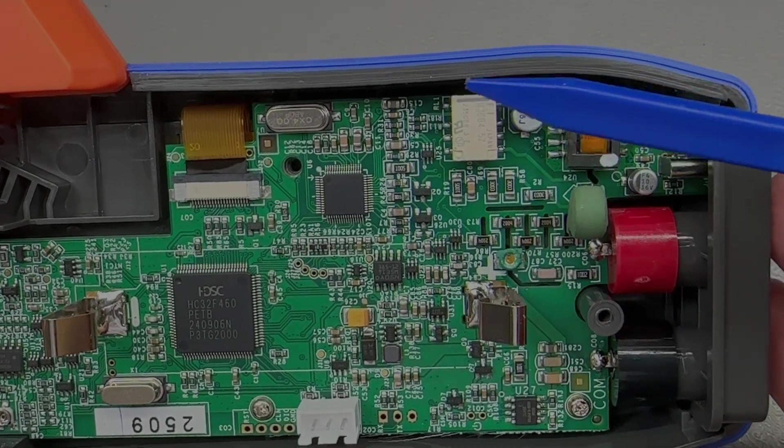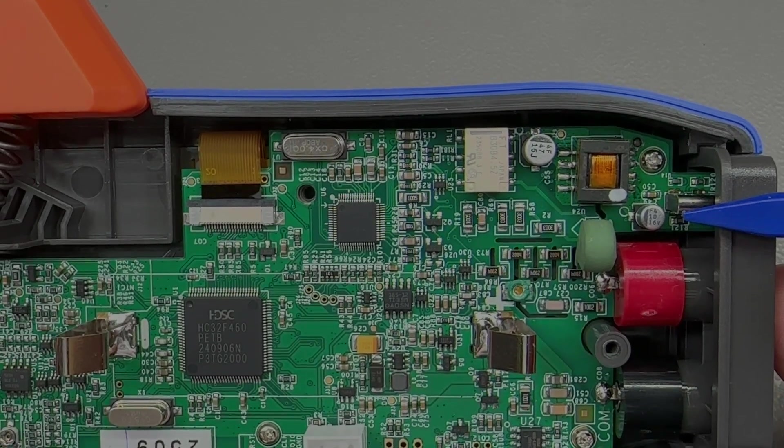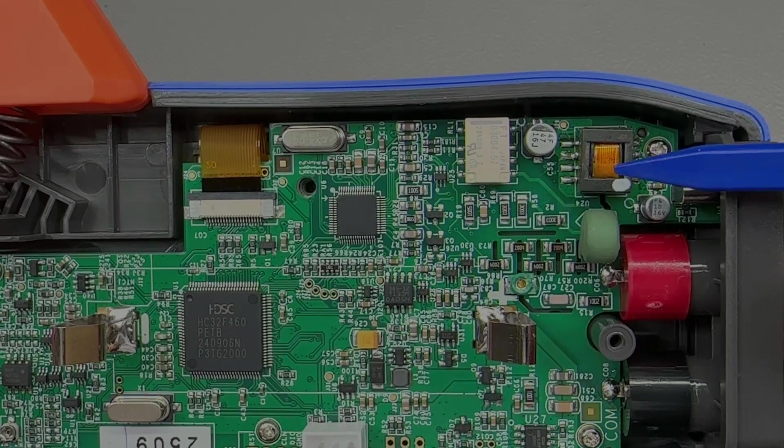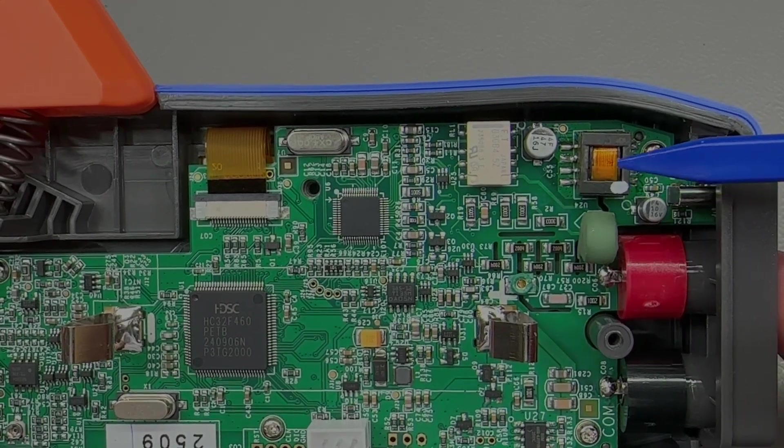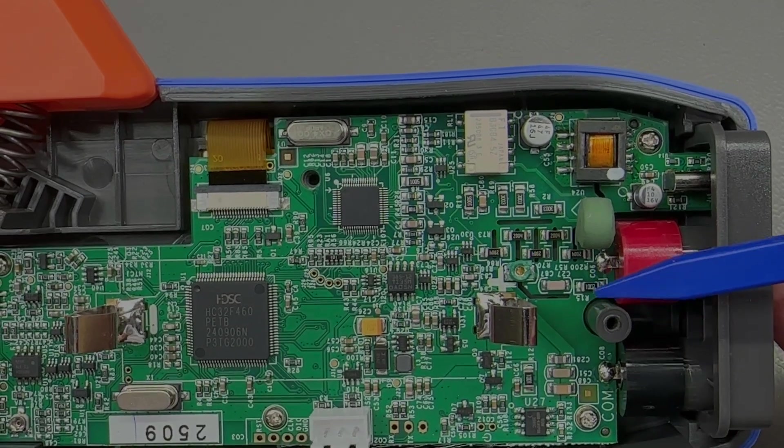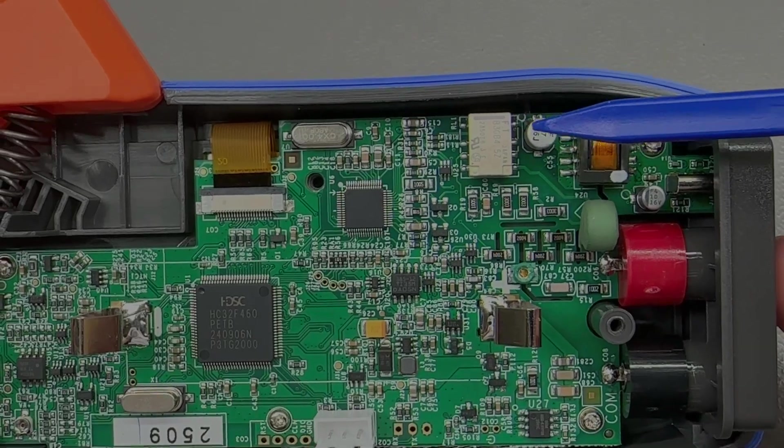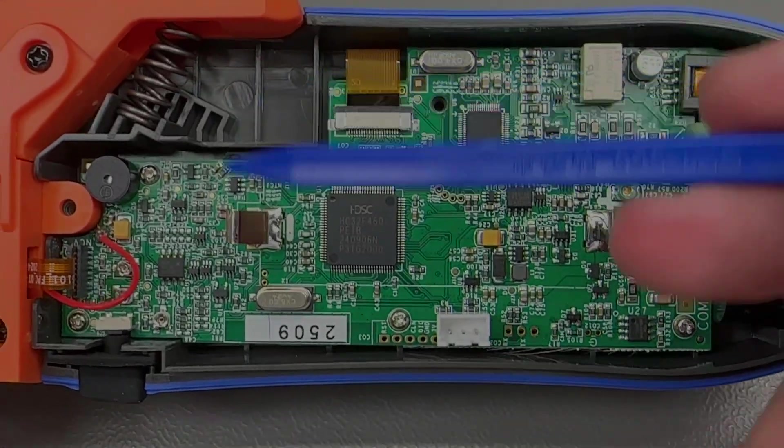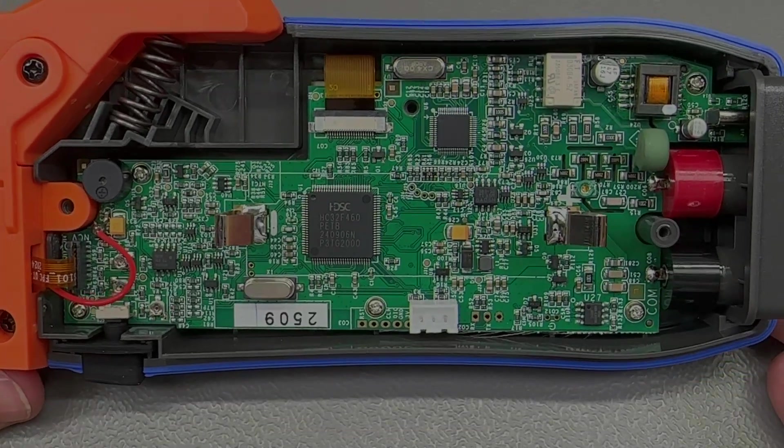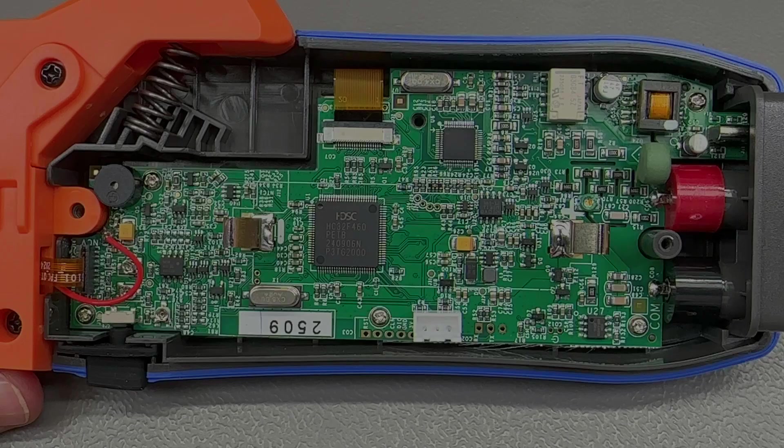But then on the USB input, which is here, we do notice an isolation transformer. So that is an isolated power input, so technically safe to use even while doing measurements through the test leads with the meter, although I would not do it just as a good safe practice. All in all, I would say a very clean and nice construction in here, with the only thing missing a MOV for improved transient input protection.